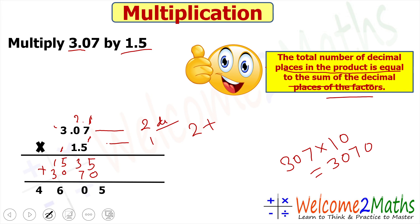So 2 plus 1 gives us three decimal places total. In our product 4605, we count three places from the right: 1, 2, 3 — and place the decimal point after the 4. So our final answer is 4.605.